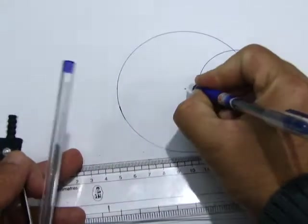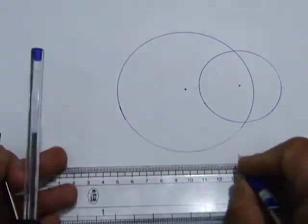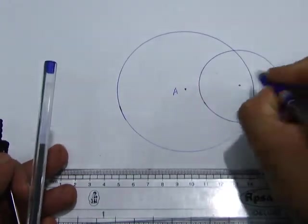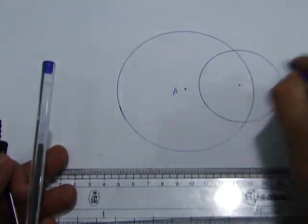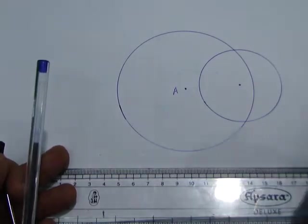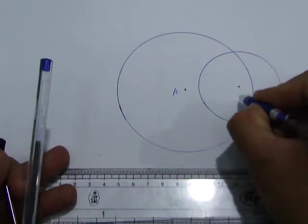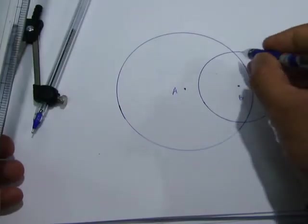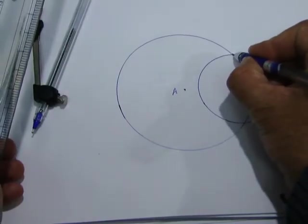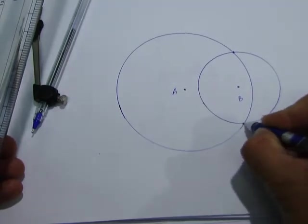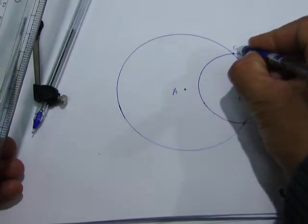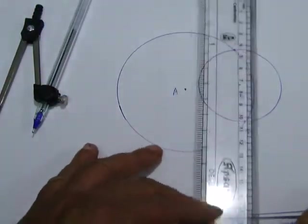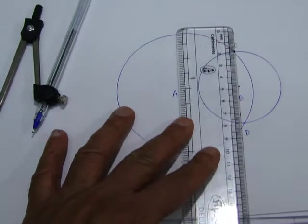This is the center of the circle of radius 5 cm. Let us name this center as A, and this is the circle of radius 3 cm with center B. The distance between them is 4 cm. These are the two common points where both circles intersect. Let us name these points as C and D. Now we will join these common points.